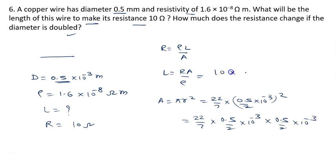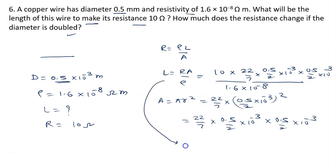Now put the value of A here. It is 22 by 7 into 0.5 divided by 2 into 10 raised to power minus 3 upon rho, the resistivity, and this value is given to us 1.6 into 10 raised to power minus 8. We will solve it and we will get L is given by 122.65 meter.